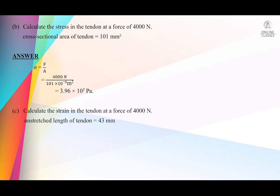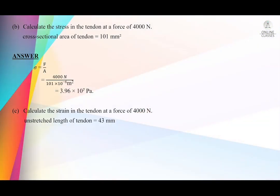Part C: calculate the strain in the tendon at a force of 4000 Newton. The unstretched length is 43 millimeters. From the force-extension graph, read the extension when force is 4000 N. Then strain = Δx/x₀ = 2.3 mm ÷ 43 mm. Both values must be in the same units so the units cancel out. Your answer can be given in decimal form, power form, or standard form.